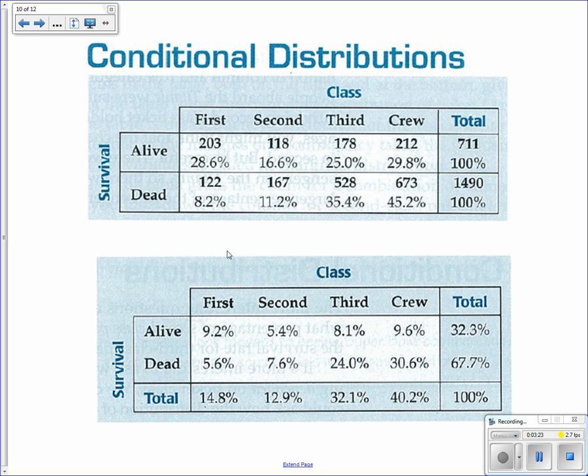You can also look at conditional distributions. We're looking specifically at one variable. For example, we're looking at percents according to those that lived and those that died. So it's out of 100%. And you can use this to better compare, not the counts, but the percentages of those in first, second, third class, and crew.